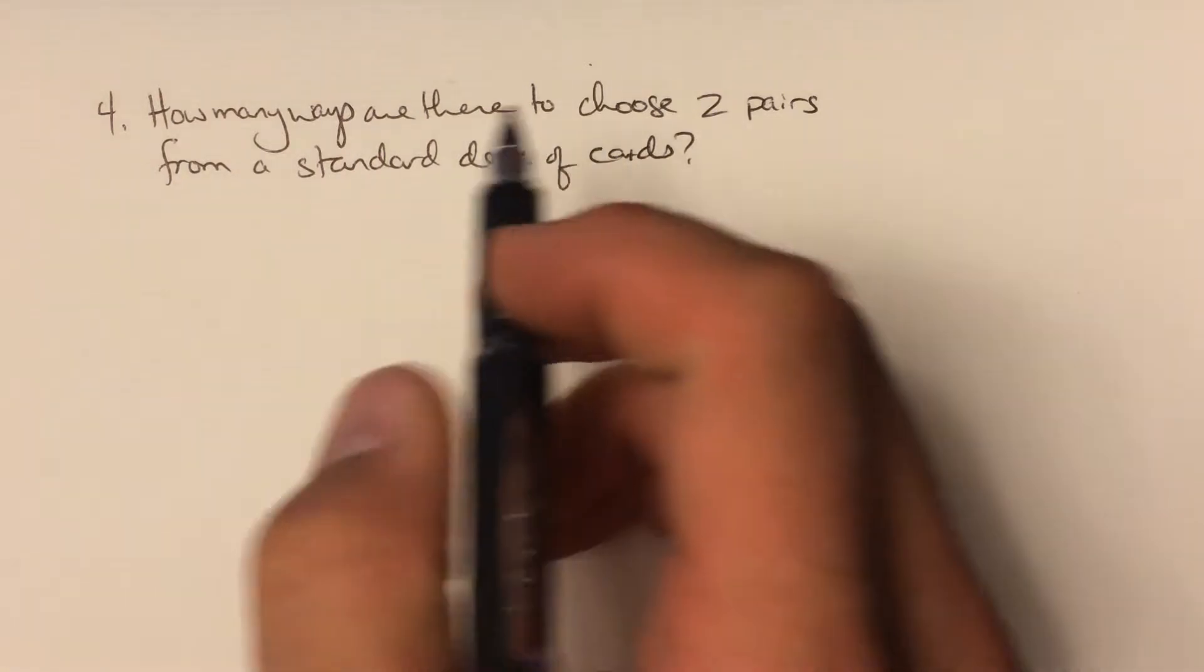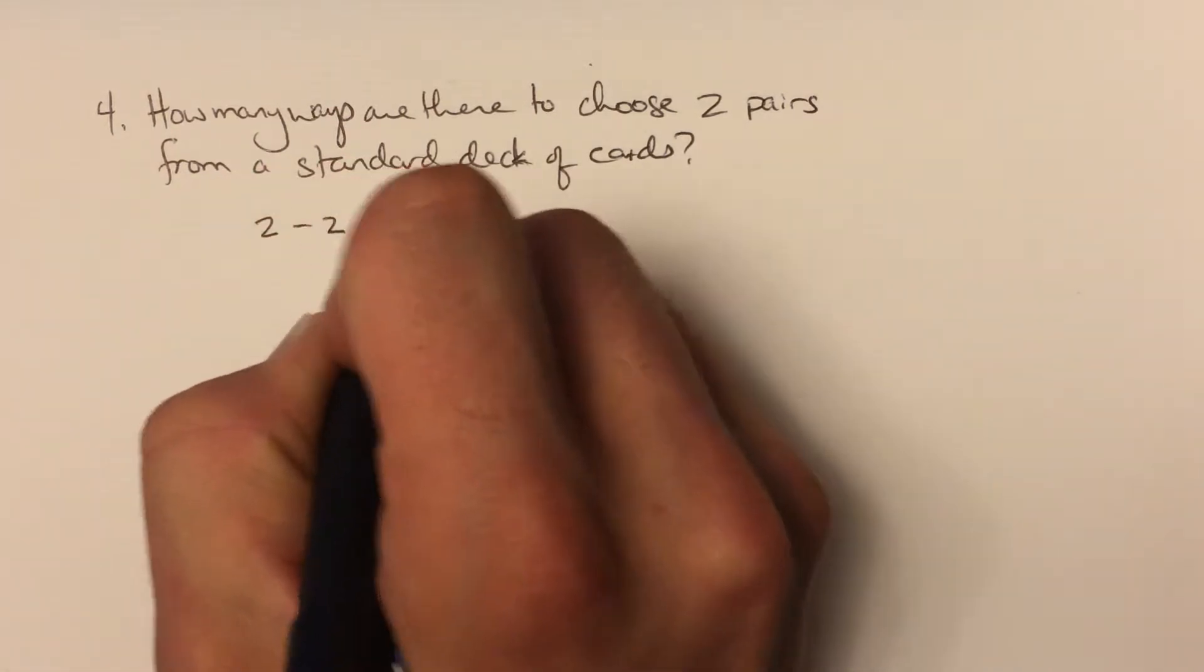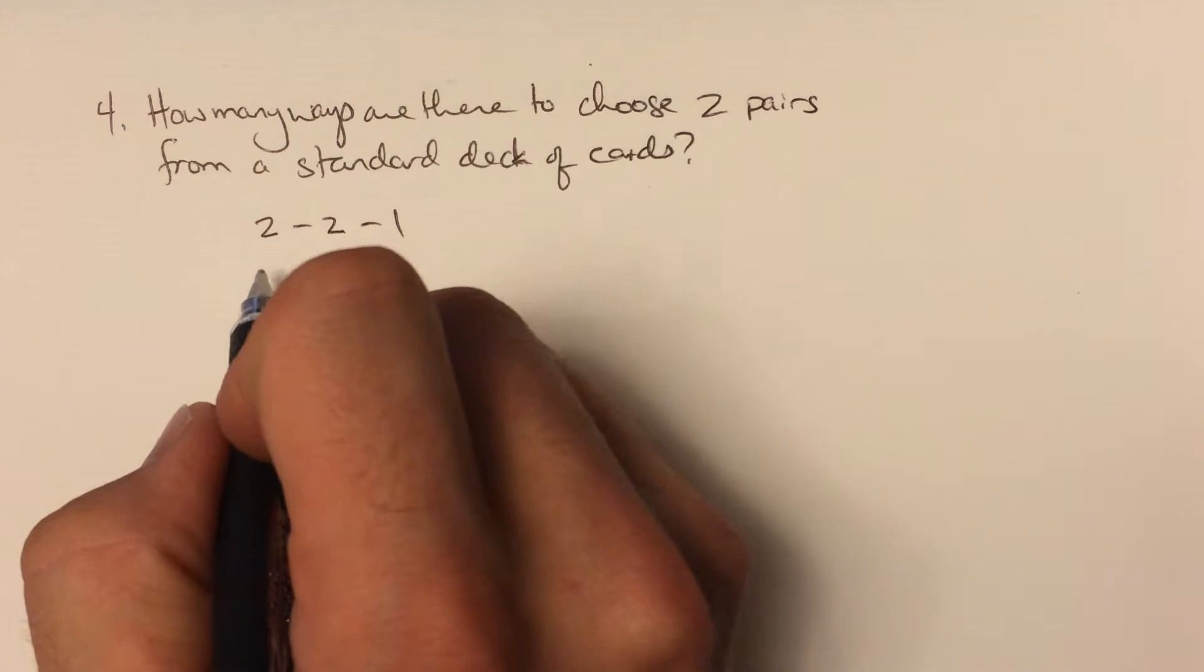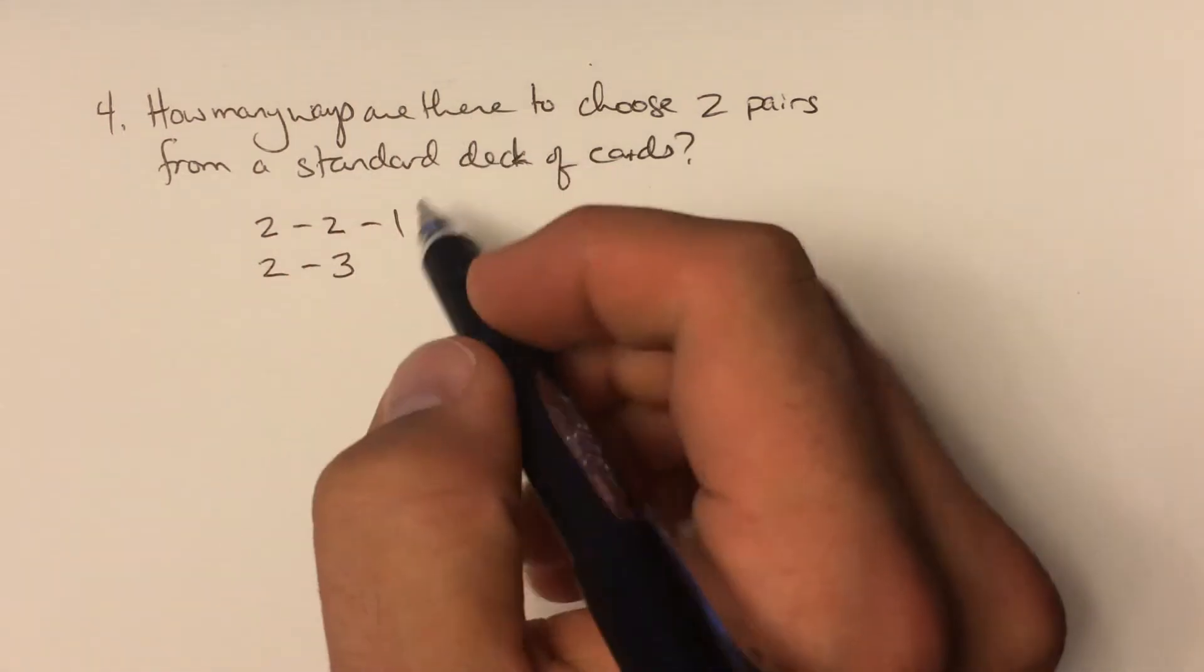For example, you could have two of one value, two of another value, and another third value. Or perhaps you have two of one value and three of another value, which in something like poker we would call a full house.